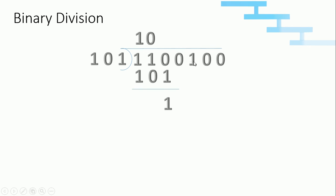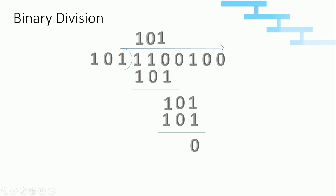To get the next value we take one zero one, which is equivalent to the divisor one zero one, so we place one in the quotient and place one zero one. One zero one minus one zero one is zero. Since all the remaining values in the dividend are zero, we move those zeros to the quotient. In this way we have done the binary division. When we divide one one zero zero one zero zero by one zero one, we got the quotient one zero one zero zero.